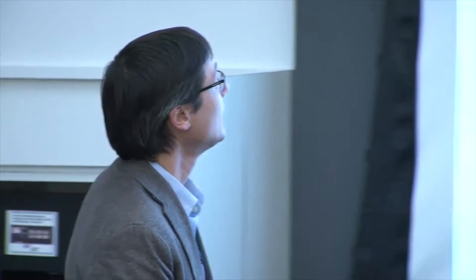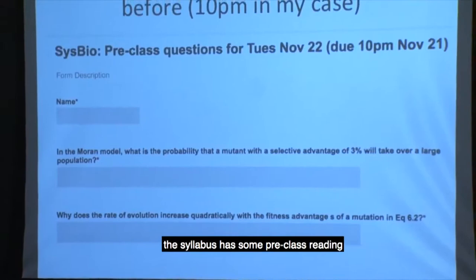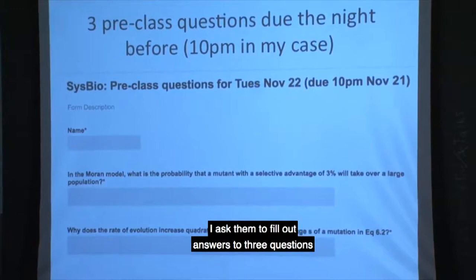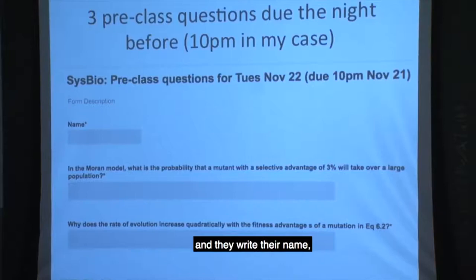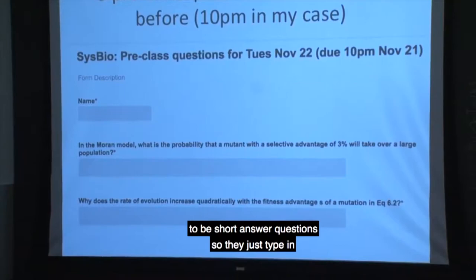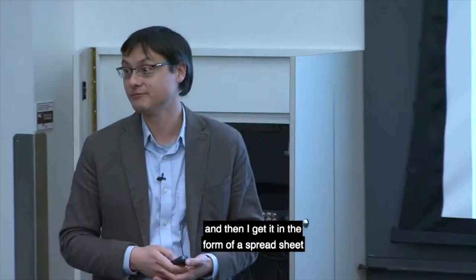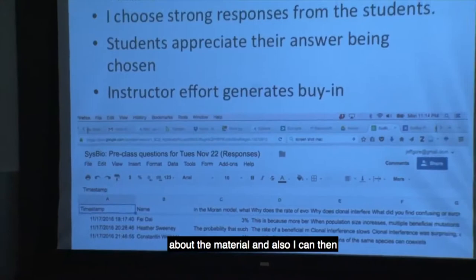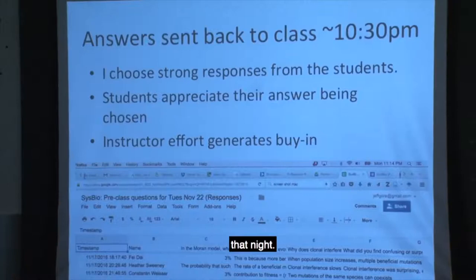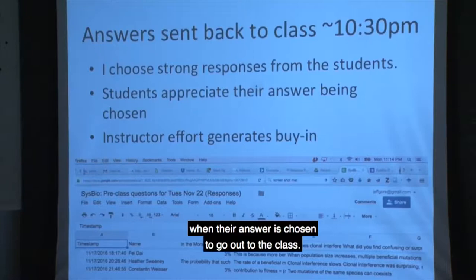The syllabus has pre-class reading, which is required in the sense that I ask students to fill out answers to three questions the night before. Basically by 10 o'clock the night before, via Google Forms, they click the link, write their name, and answer a few short-answer questions. I get the responses in a spreadsheet. Then that night around 10:30, I go through the answers, get a sense of how students felt about the material, and send back what I view as strong responses. Students appreciate having their answer chosen to go out to the class, and I think the fact that I'm doing some work alongside them makes them feel less annoyed about doing the pre-class questions.